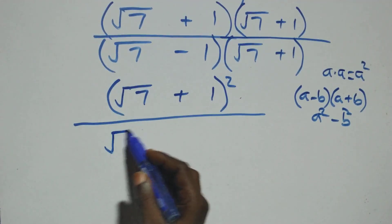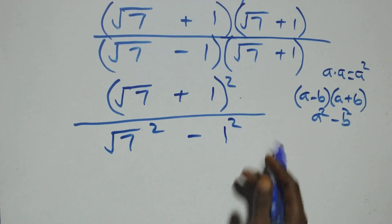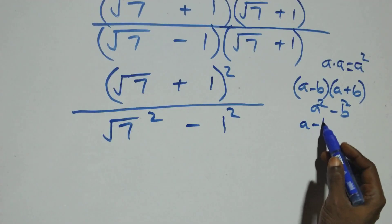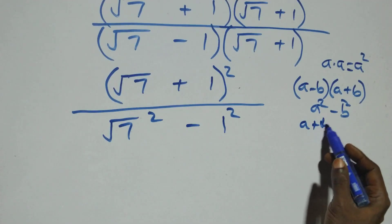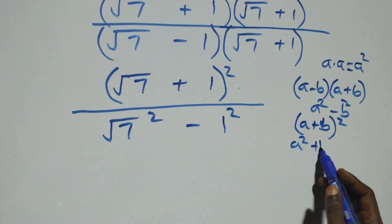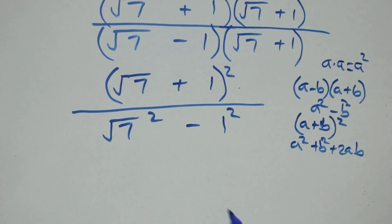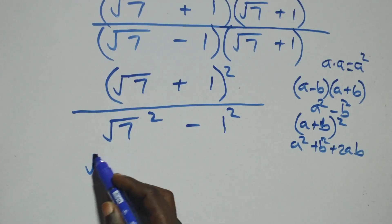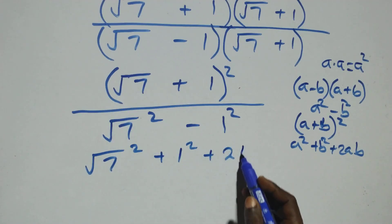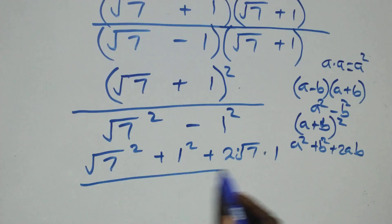Here, a stands as √7 — we have √7 squared — minus b = 1, that is 1 squared. The expansion up in the numerator follows when we have (a + b)² which expands to a² + b² + 2ab. So this gives us √7 squared plus 1 squared plus 2 times √7 times 1.